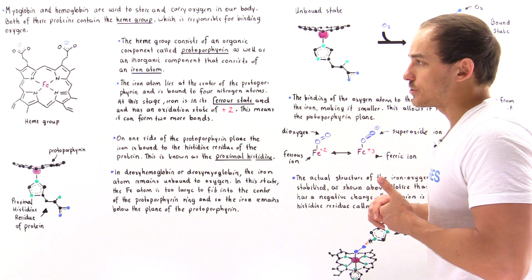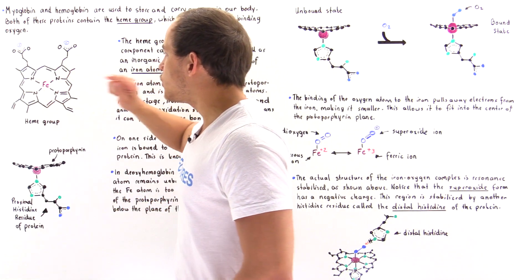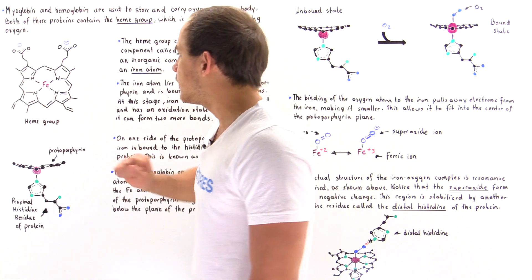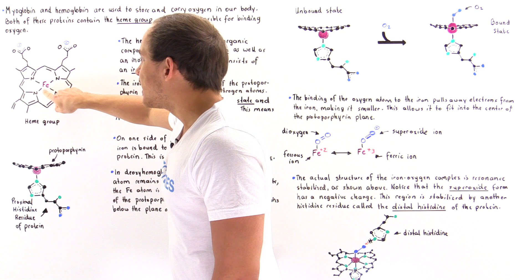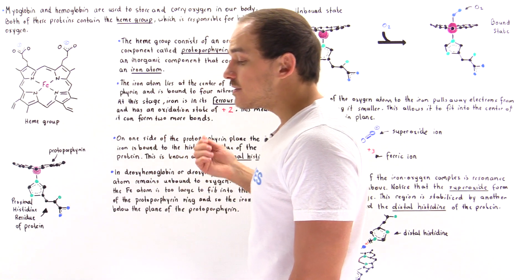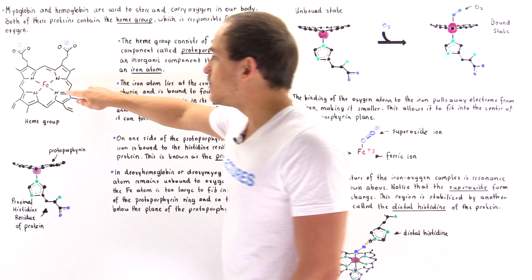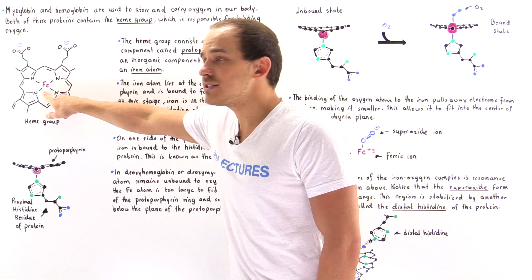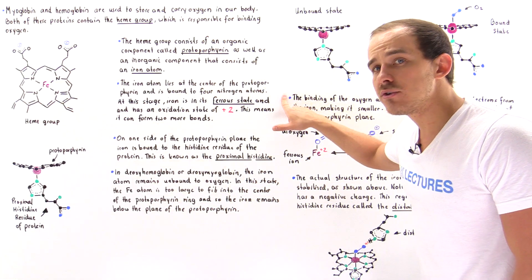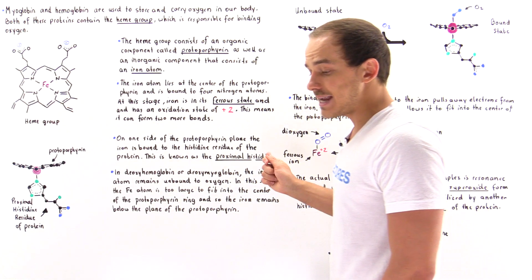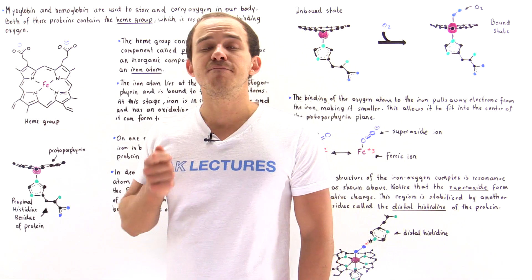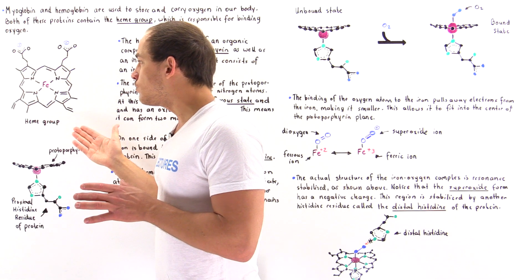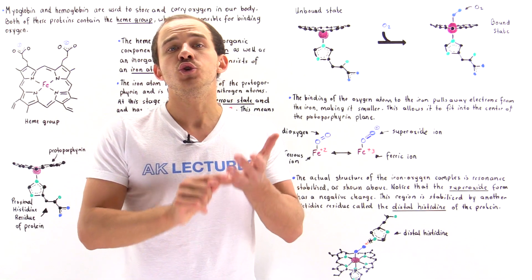It's this Fe atom that is responsible not only for binding to the protein, but also for binding to that oxygen. Notice, as shown in this diagram, this Fe atom is bound to four nitrogen atoms — one, two, three, four. Fe can have an oxidation state of positive six, but in this particular case, because we have four bonds, the Fe is in its ferrous state, meaning it has an oxidation number of positive two. So our Fe atom at the center of the heme group can form two other bonds.